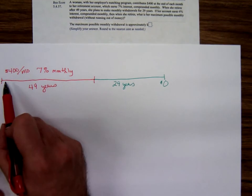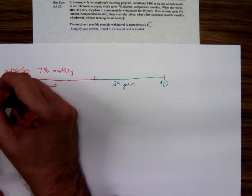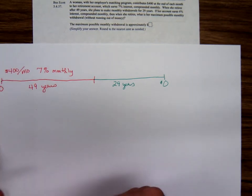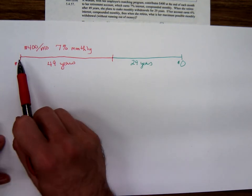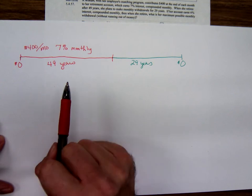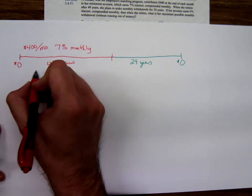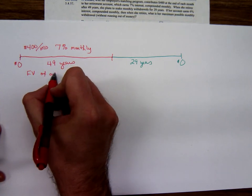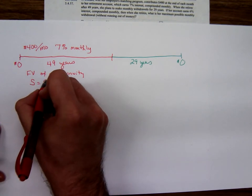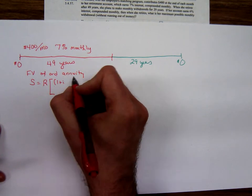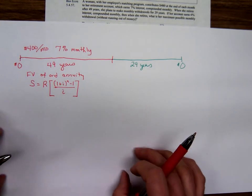This first part of the timeline, how much did she begin with here in the account? Zero. So as she's saving for retirement, is that an annuity? What do y'all think? Yes, it's an annuity. It certainly is. So which formula? Are we looking at a present value or a future value here? Future value. I wasn't expecting y'all to get that. So this is going to be a future value of an ordinary annuity. And that formula S equals R times (1 + i)^n - 1 all over i.